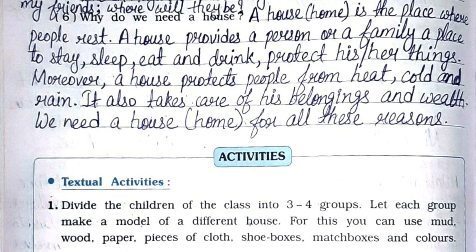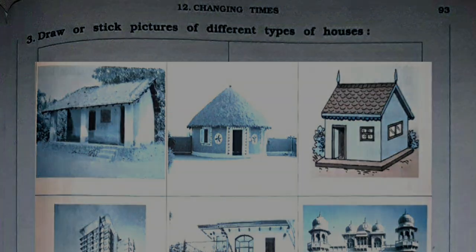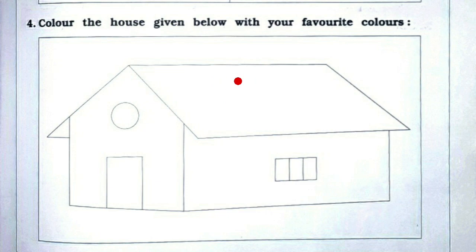Now we'll see the activities. The third activity is to draw or stick pictures of different types of houses — you can draw or stick pictures of these houses. Fourth: Color the house given below with your favorite colors — I hope that you can do that.